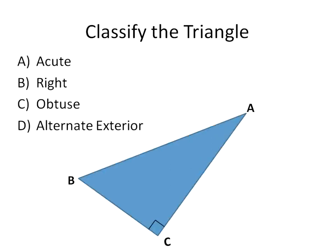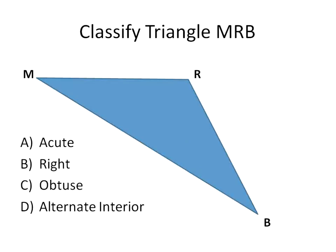Test question number two: is this triangle acute, right, obtuse, or an alternate exterior angle? This one here is definitely a right triangle. We know that by the label on angle C — that block. It's got a 90 degree angle.